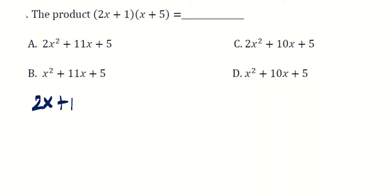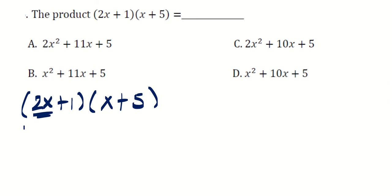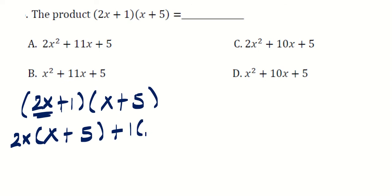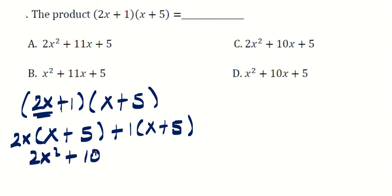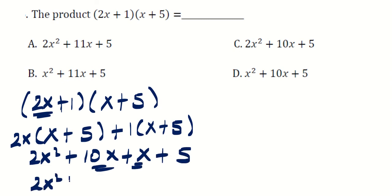The next question asks for the product of (2x plus 1)(x plus 5). Expanding: 2x times x is 2x squared, 2x times 5 is 10x, 1 times x is x, and 1 times 5 is 5. Collecting like terms, 10x plus x is 11x, giving the final answer 2x squared plus 11x plus 5.